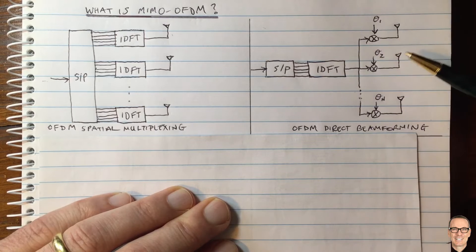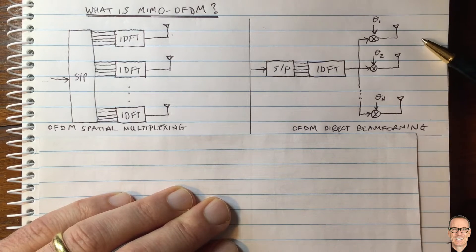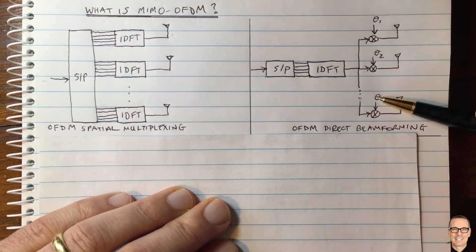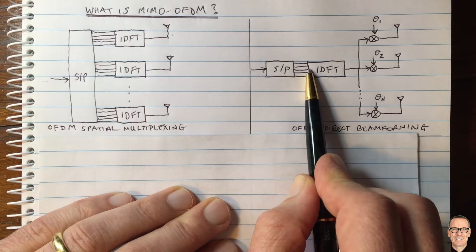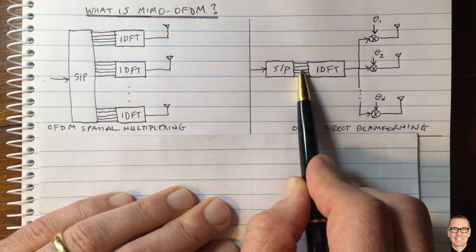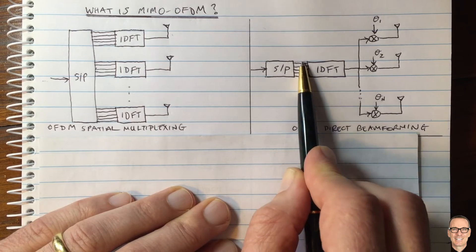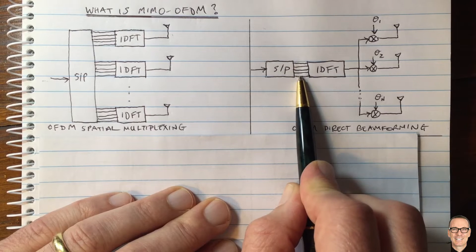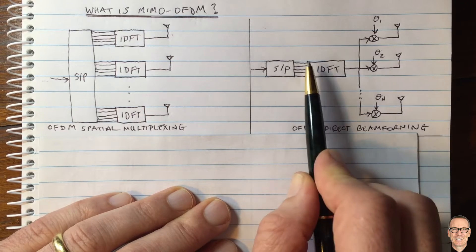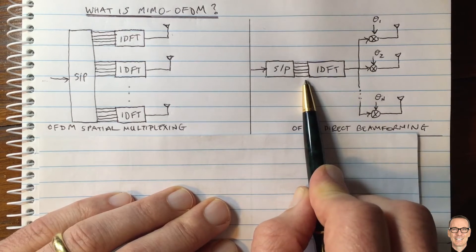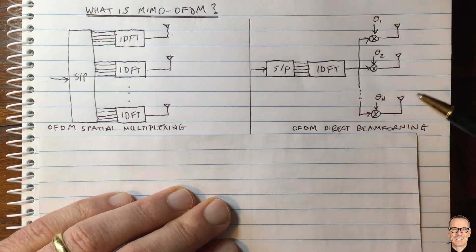So we start to think we probably need a beamformer for each subcarrier separately — one set of phases may not work across that wide bandwidth. You can still use direct beamforming and it will work to a degree, since if the phases are chosen for the center subcarrier they'll likely work for neighboring subcarriers too. But over a wider bandwidth with many subcarriers, you will need a different type of beamforming.